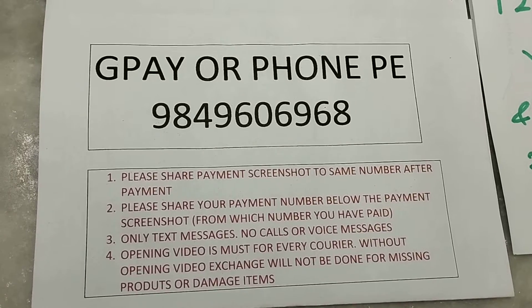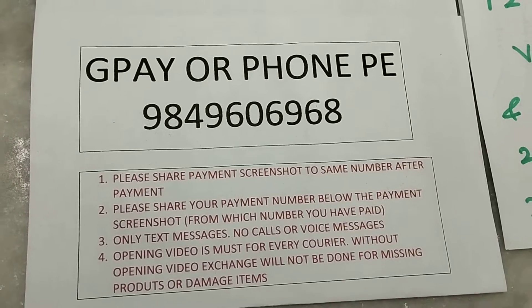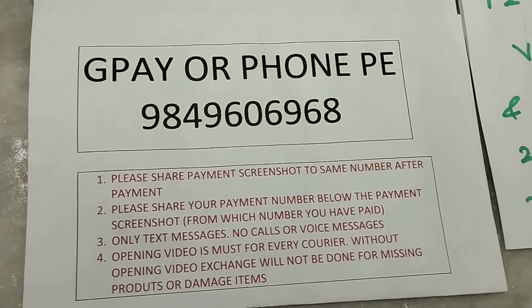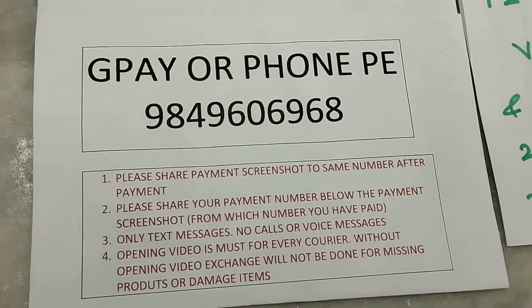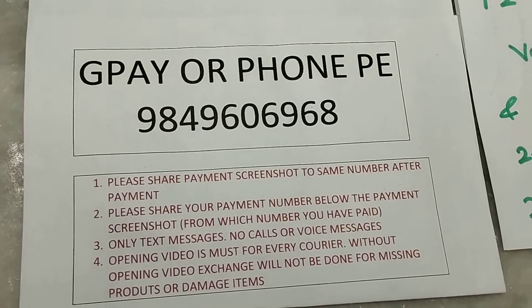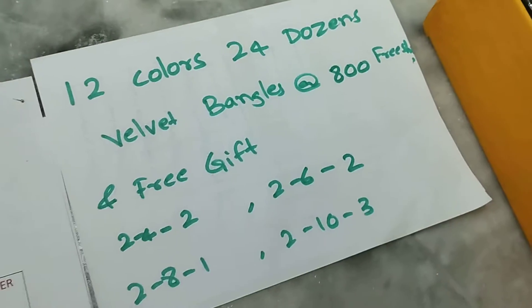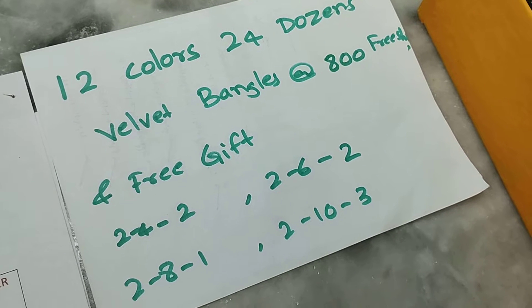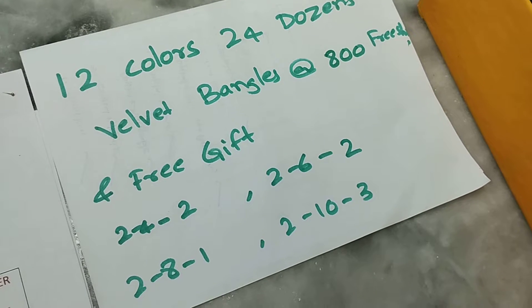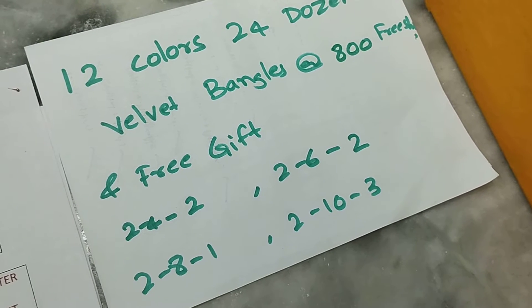Hi y'all, welcome back to the Eye Collections. We have two dozen and twenty-four dozen. Colors are two dozen and twelve colors. The offer is twelve colors and twenty-four dozen velvet bangles at the rate of 800, free shipping and free gift.